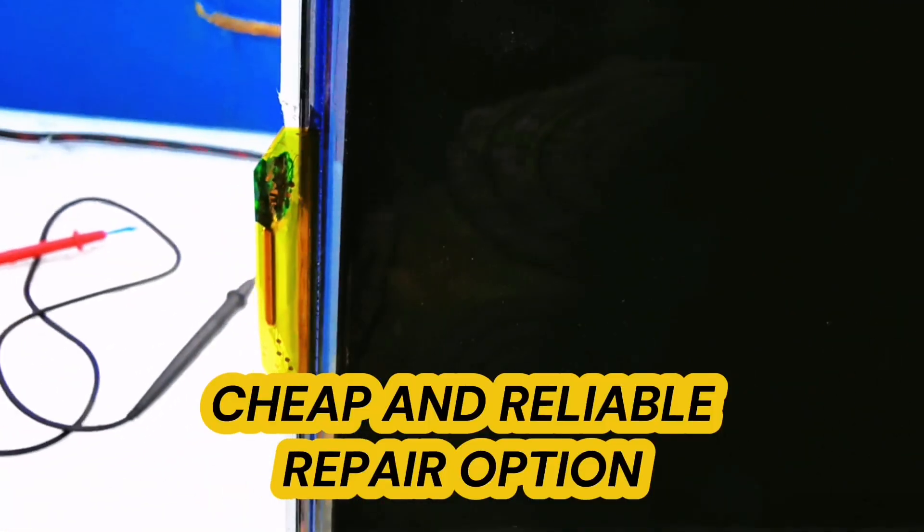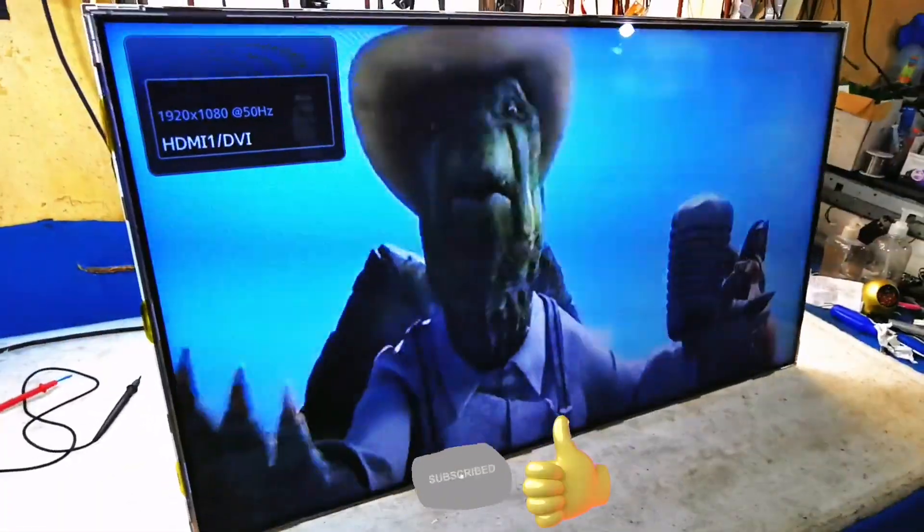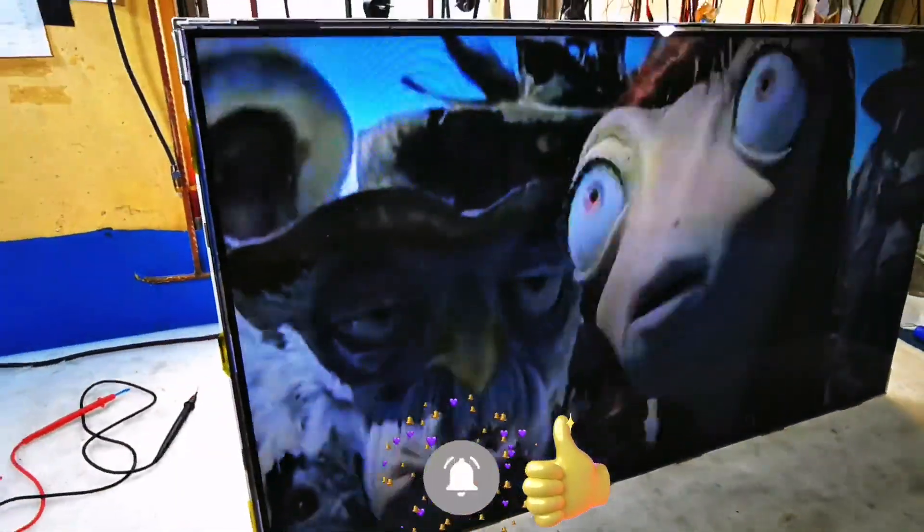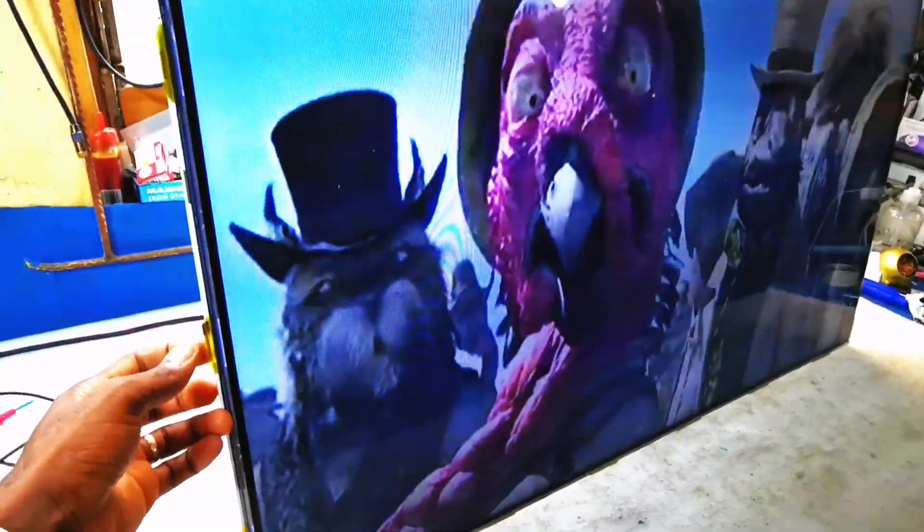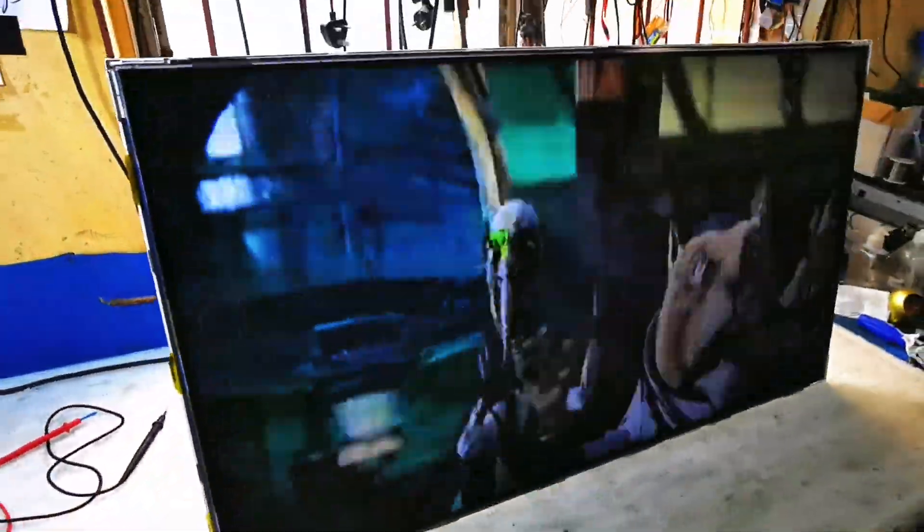Why do I choose to go with this cheap and reliable repair method? It's because if you cut off the kidneys on one side, you'll face two consequences. First, the resolution of the screen will be reduced by half, which would be noticeable. One side would appear a little dark.